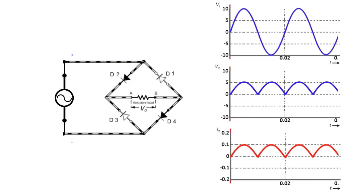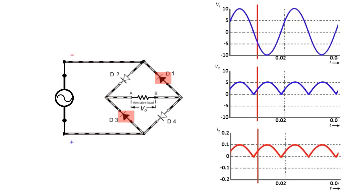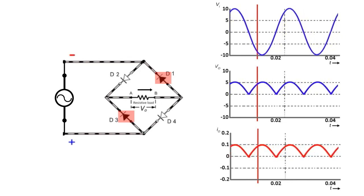In the positive half cycle, diodes D2 and D4 get forward biased. Therefore they conduct and current flows through the load in this direction, let's say from A to B. Now in the negative half cycle, diodes D1 and D3 get forward biased and conduct the current again in the same direction, that is from A to B.